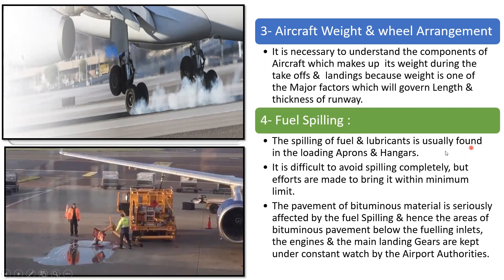The next characteristic is fuel spillage. Spilling of fuel and lubricants is usually found in the loading apron and hangar areas, where aircraft remain in contact with the ground for the most time. It is difficult to avoid spillage completely, but efforts are made to bring it to a minimum. Bituminous pavement is seriously affected by fuel spillage, so areas below fueling inlets, engines, and main landing gear are kept under constant watch by airport authorities.